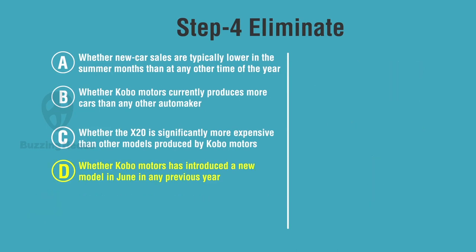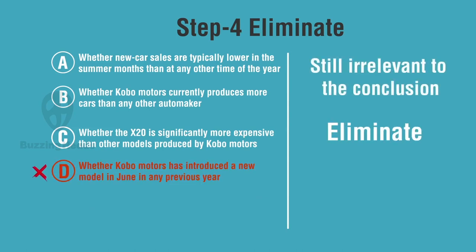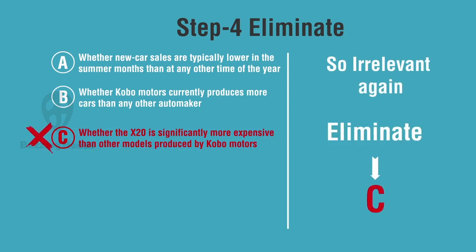D. Introduced any model last year. Still irrelevant to the conclusion. We can eliminate this one as well. C. Whether X20 is expensive than other models of Kobo. The conclusion doesn't talk about the price, so irrelevant again. Eliminate this one too.